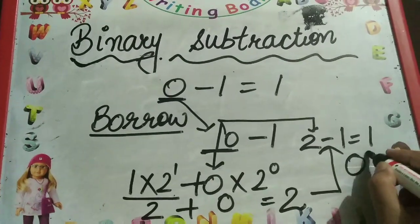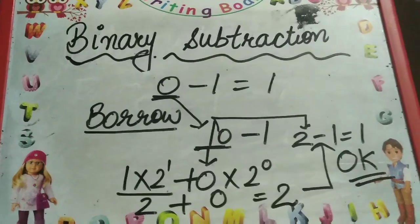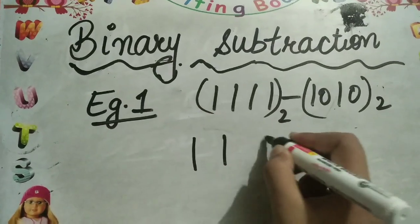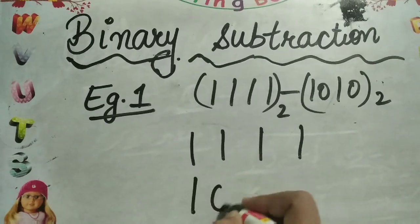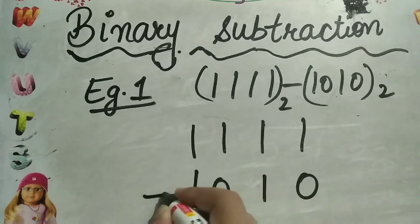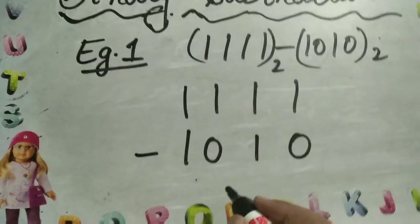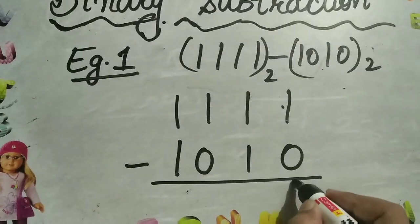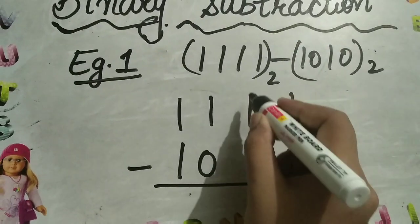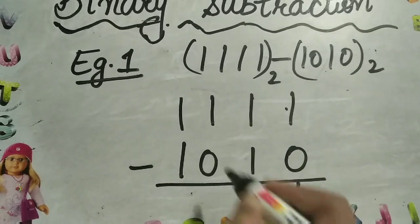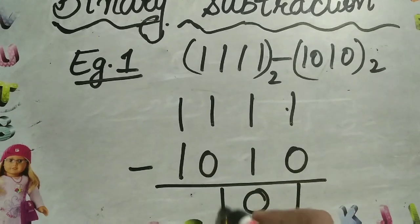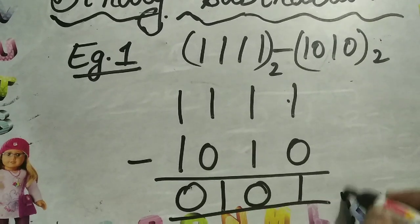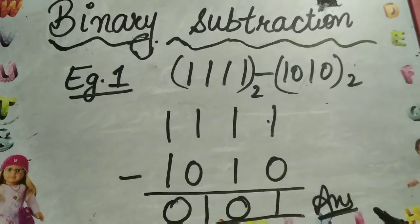That is why 0 minus 1 equals 1. Let us take an example: 1111 minus 1010. Arranging in columns and starting from the rightmost side: 1 minus 0 equals 1, 1 minus 1 equals 0, 1 minus 0 equals 1, and 1 minus 1 equals 0. So the answer is 0101.